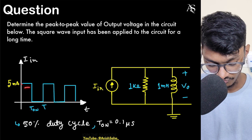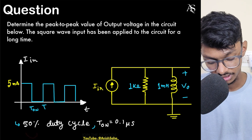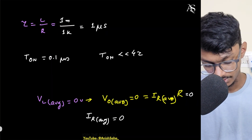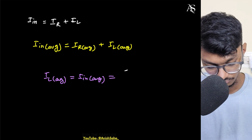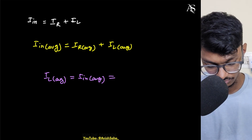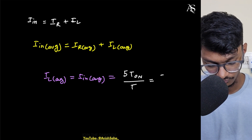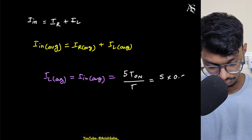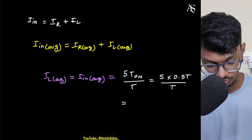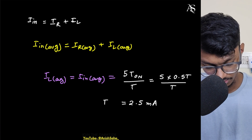Now we compute I_in_average. It is the area under one time period: 5 mA × T_on divided by T. Since T_on = 0.5 T (50% duty cycle), this gives 5 × 0.5 = 2.5 milliamperes. So I_L_average = 2.5 mA.